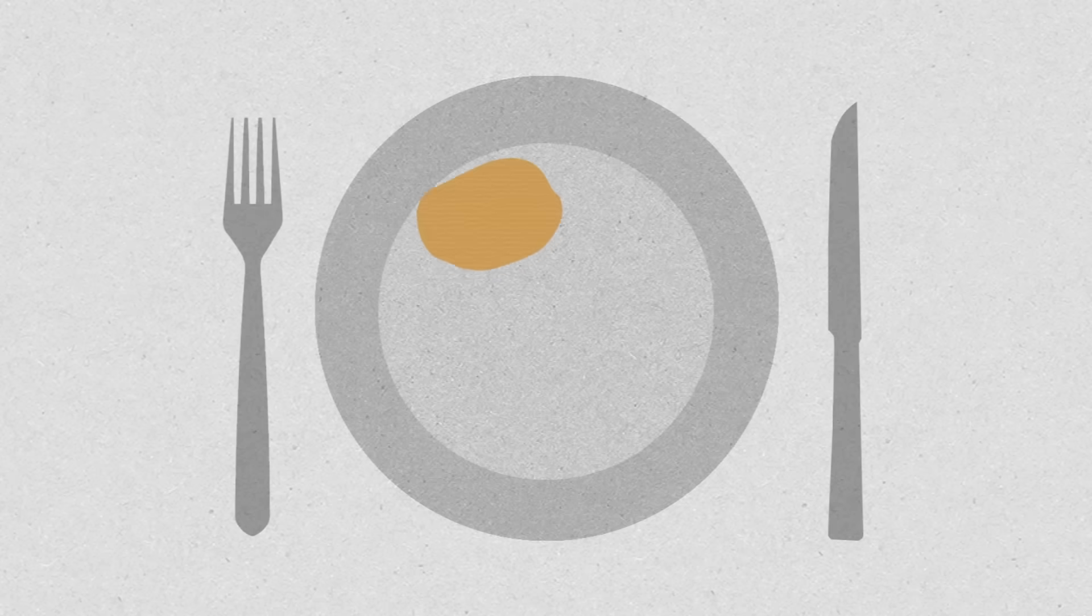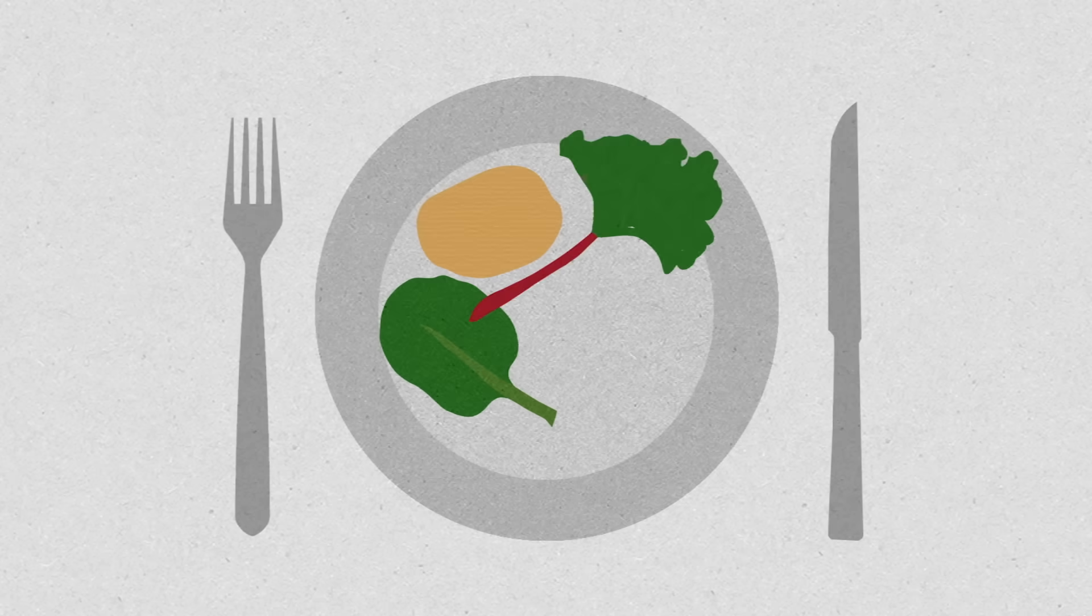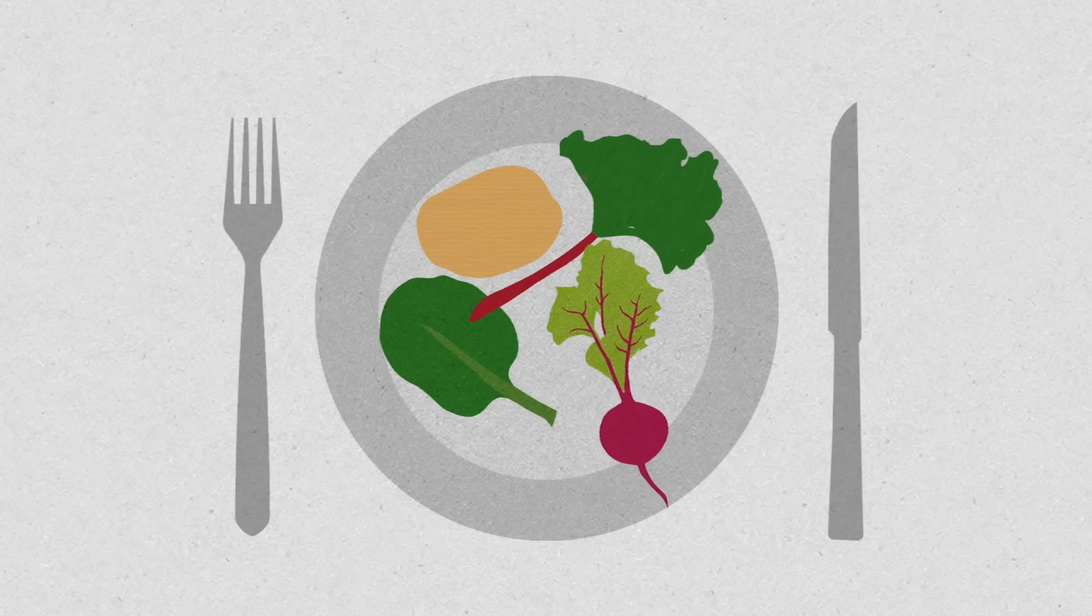Foods like potato chips, spinach, rhubarb, and beets are high in oxalate, so doctors might advise limiting them.